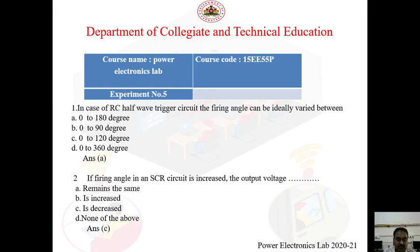Question 2: If the firing angle in an SCR circuit is increased, the output voltage — A) remains the same, B) is increased, C) is decreased, D) none of the above. As discussed in the conclusion, as the firing angle is increased the output voltage is going to be decreased. So the answer is C — decreased.